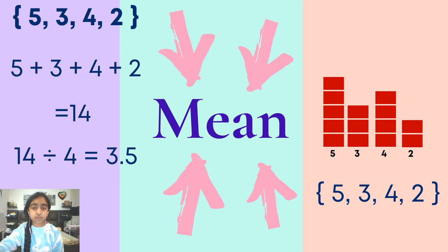Let's take another example. Let's have another data set of 4 numbers. This time we have 5, 3, 4, and 2. First, we add all of our numbers. 5 + 3 + 4 + 2 = 14. Now we divide 14 by 4, which is 3.5.